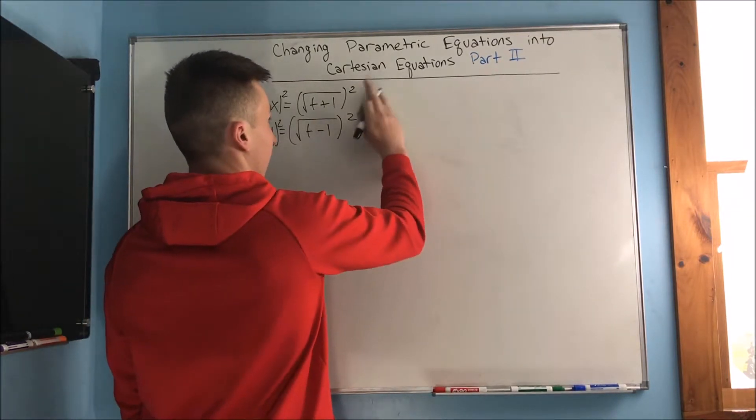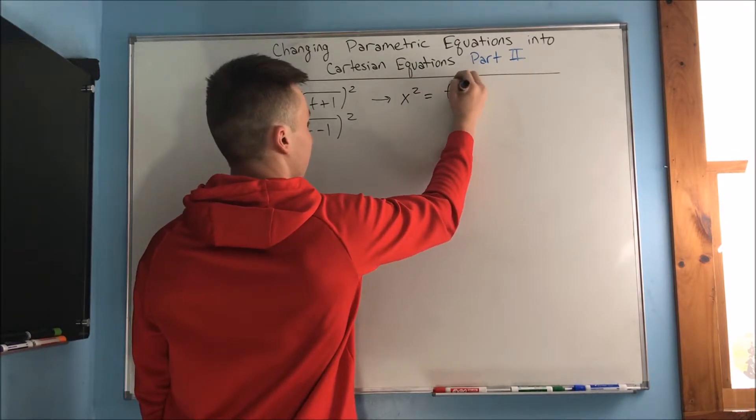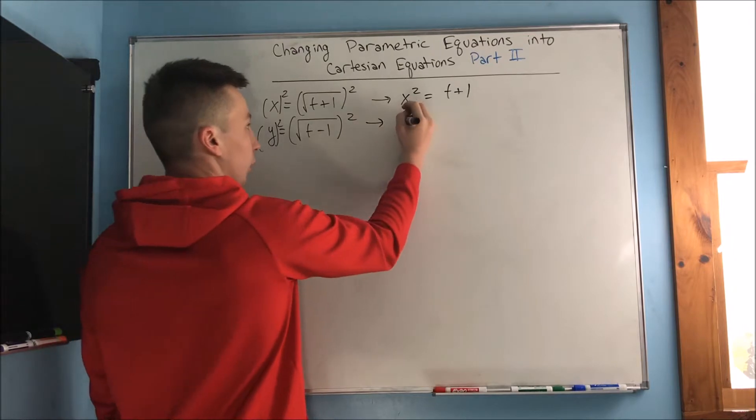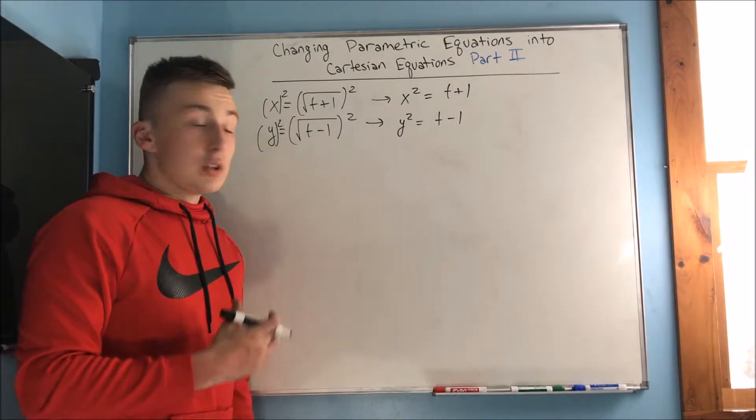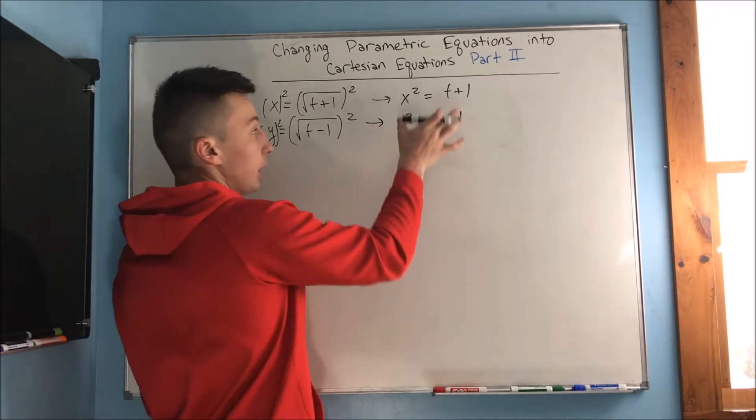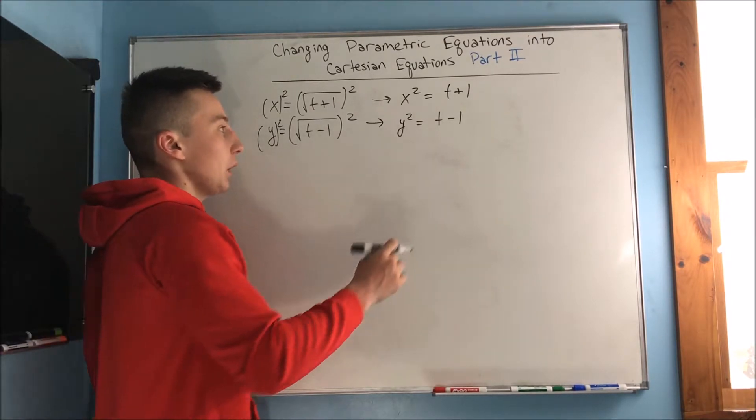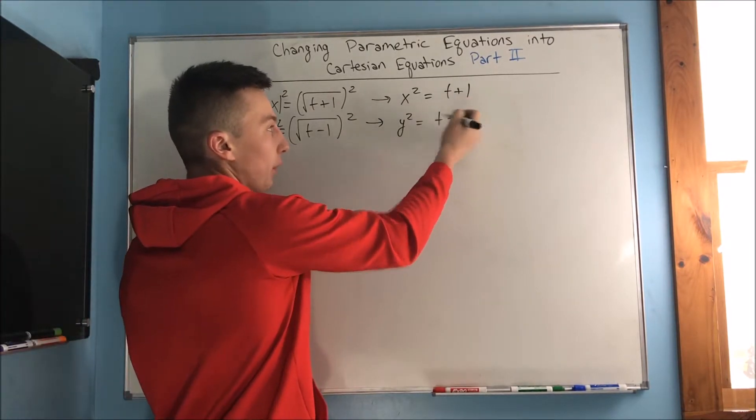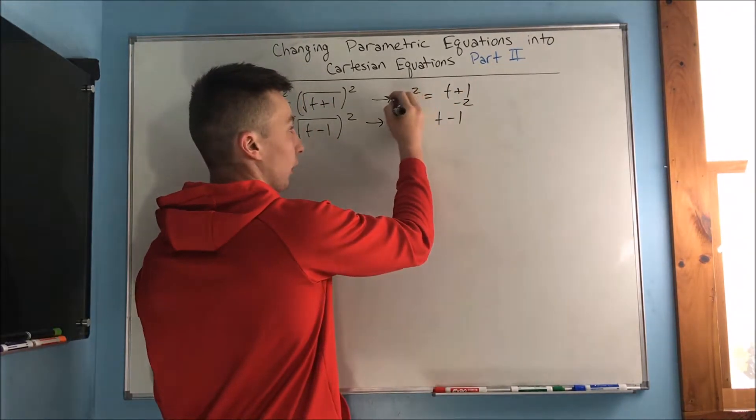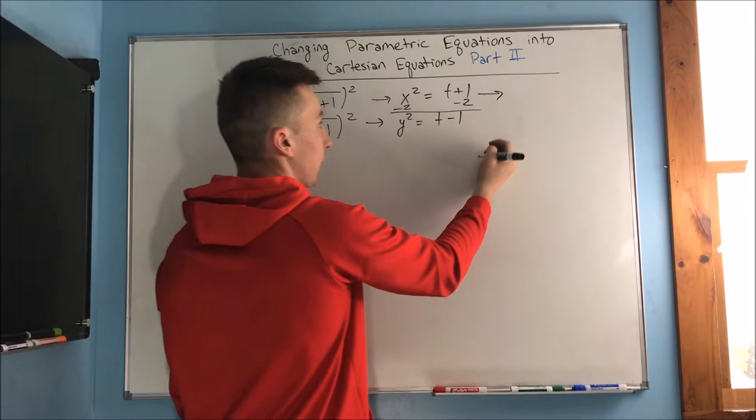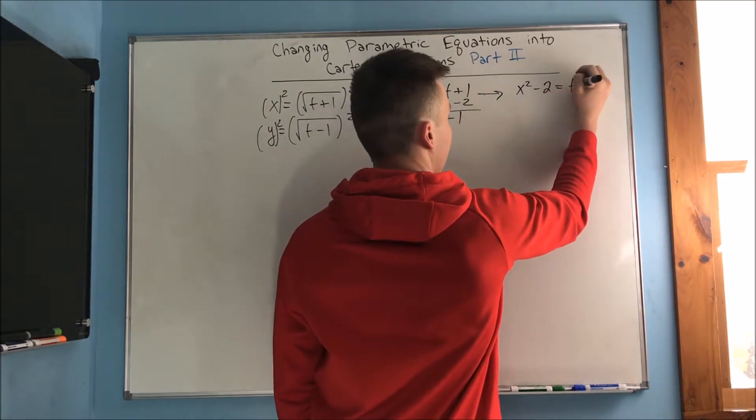We're going to end up getting that x squared equals t plus 1 and we end up getting that y squared equals t minus 1. So all we have to do now to get these two actually equal to each other so we can cancel out that parameter—why don't we just make these both t minus 1? We can do that by subtracting 2 on both sides for this x squared equation, so we end up getting that x squared minus 2 equals t minus 1.